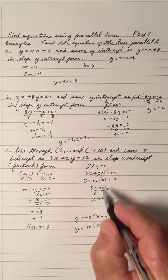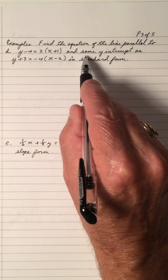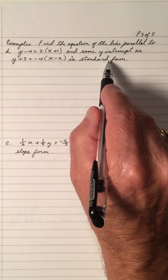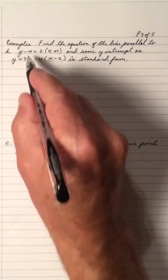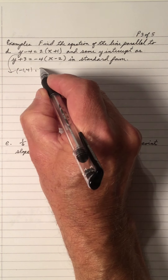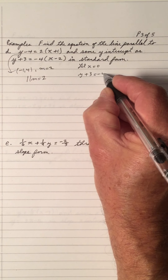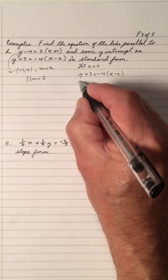Find the equation of a line parallel to this one having the same y-intercept as this one in standard form. Parallel to this one — that's the point-slope form, where the point is negative 1 and 4, and the slope of this line is 2. So the parallel slope is also 2, because parallel lines have the same slope. To get the same y-intercept, we let x equal 0. So if I write down the equation and let x equal 0...